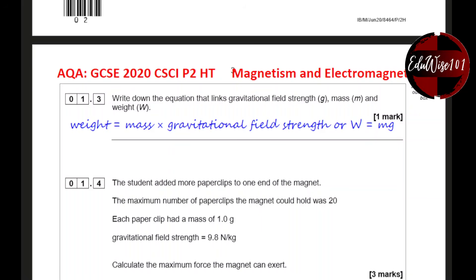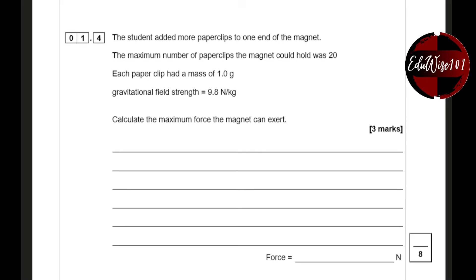Question 1.4, the student added more paper clips to one end of the magnet. The maximum number of paper clips the magnet could hold was 20. Each paper clip had a mass of 1 gram. Gravitational field strength is 9.8. Calculate the maximum force. Now the maximum force is the weight or the maximum weight that it can actually hold. So W equals mg.